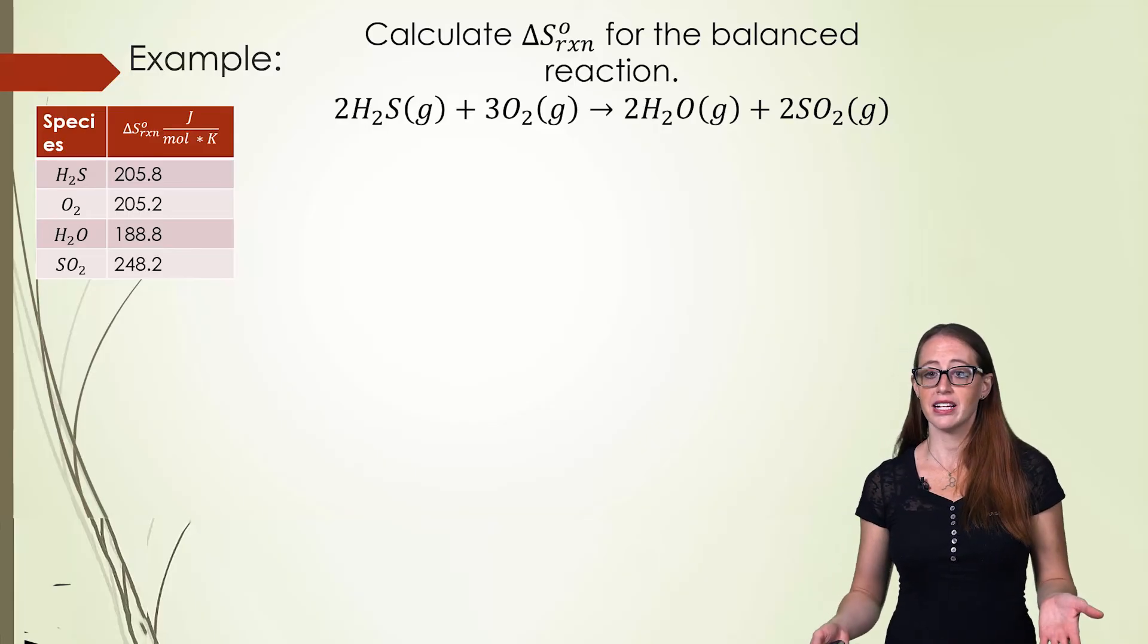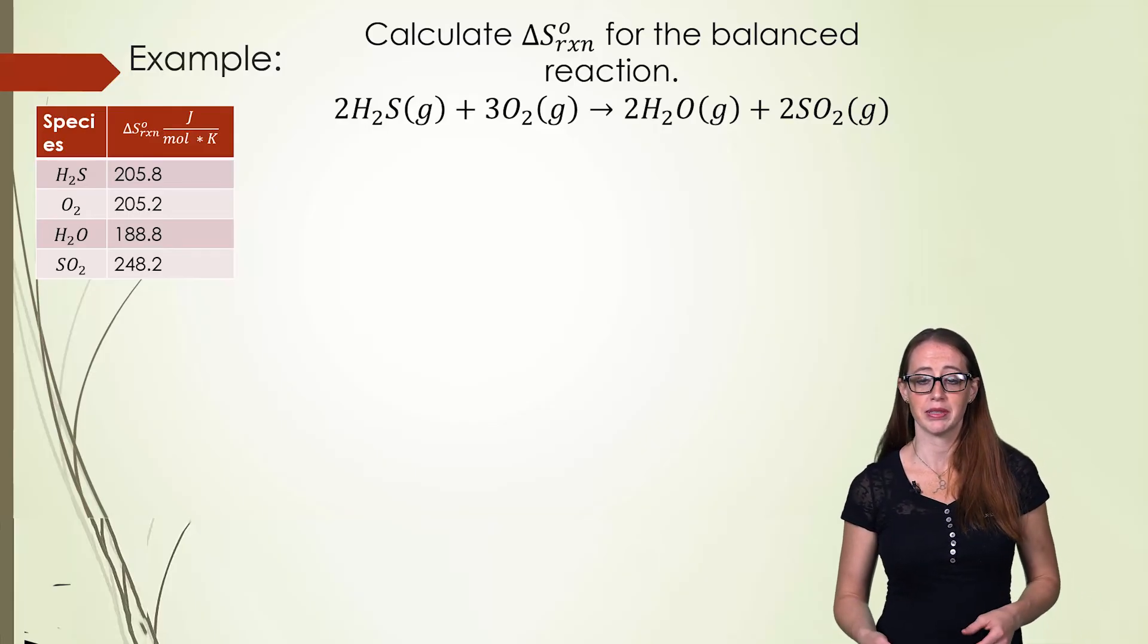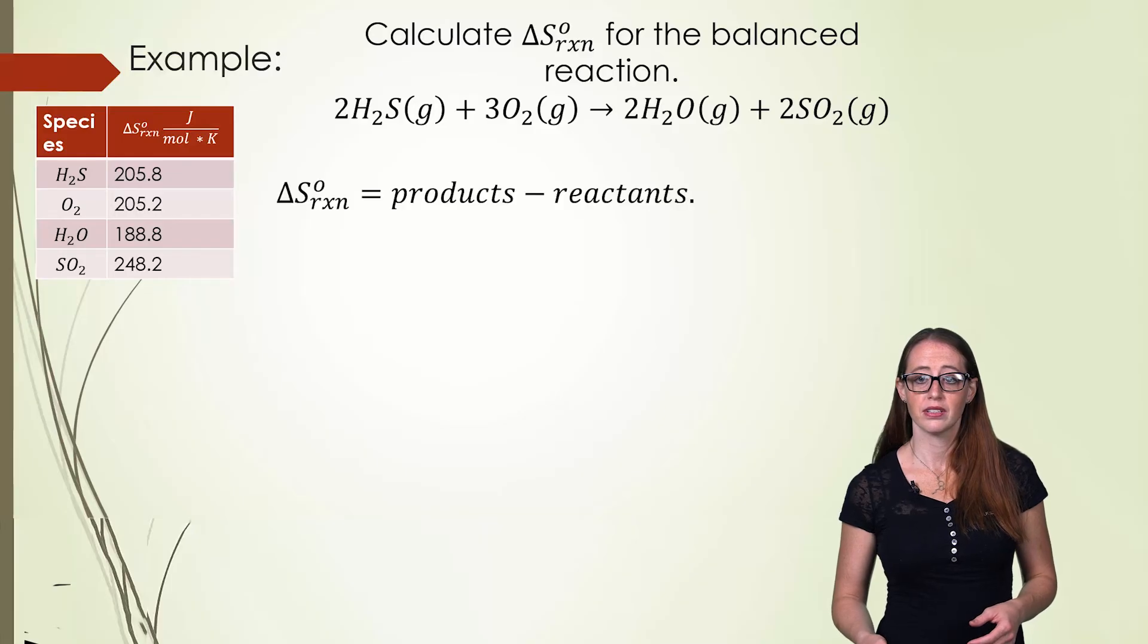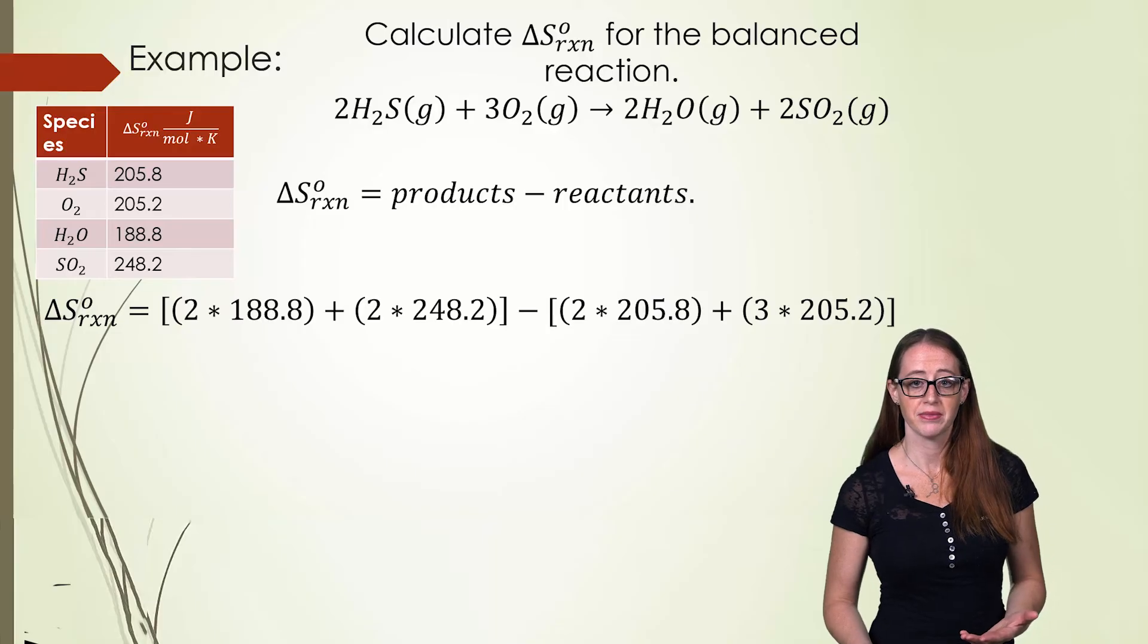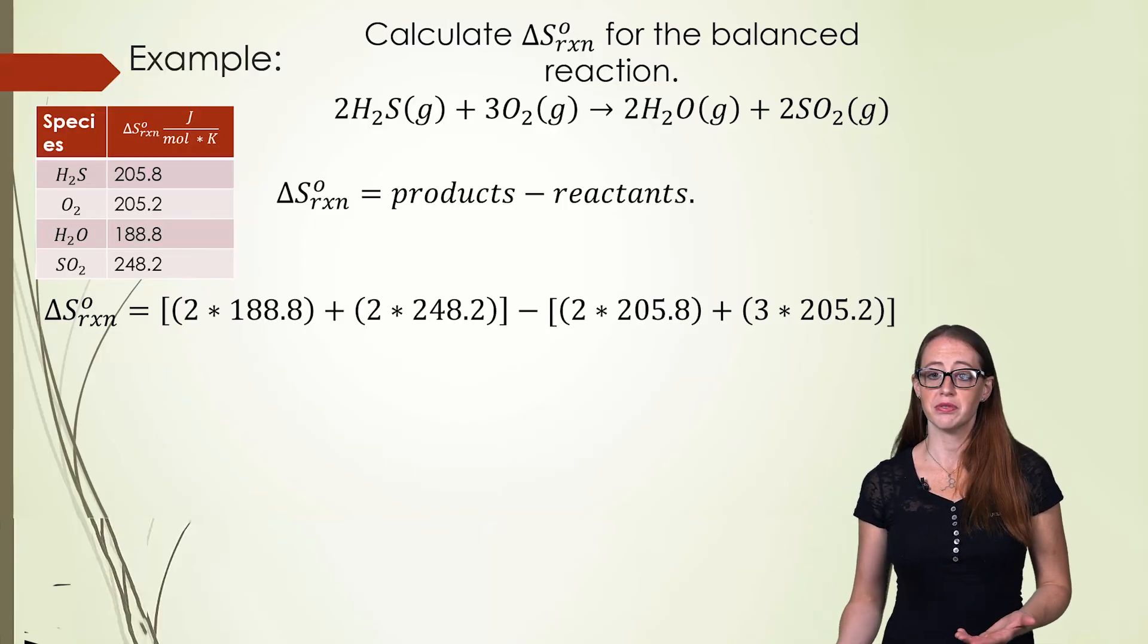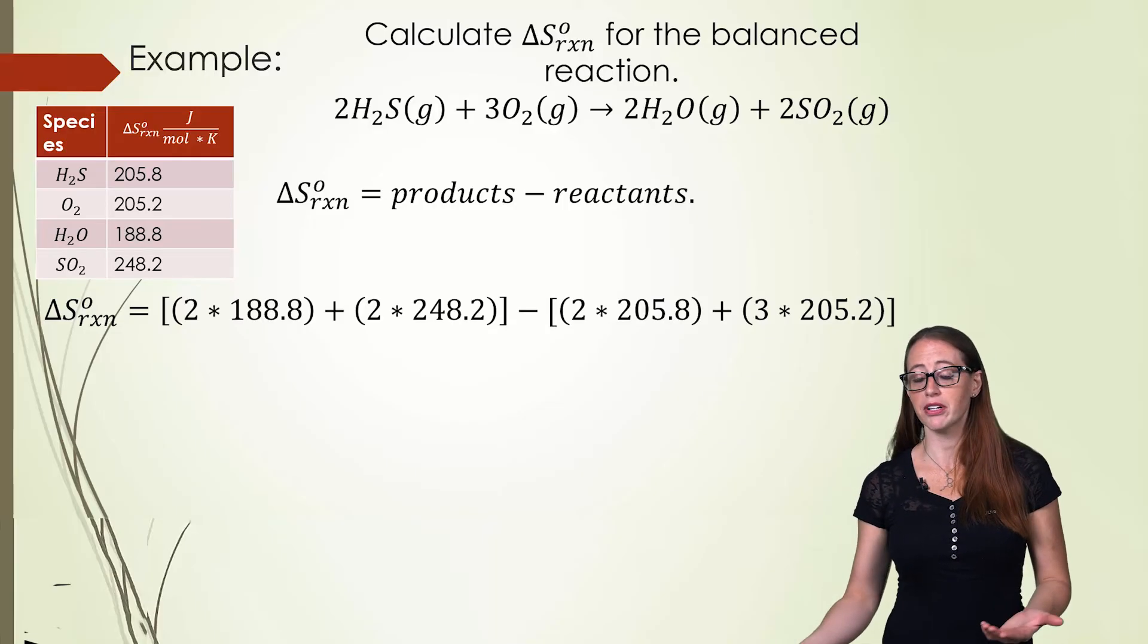If you haven't yet, take a moment and do this yourself before moving forward. We need to add up each of the products, multiplied by their coefficients. And then we will subtract off each of the reactants, multiplied by their coefficients.